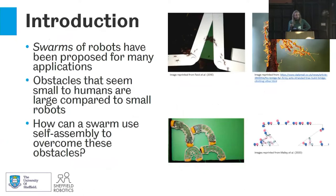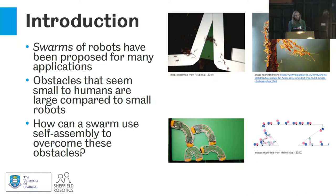We'll do a bit of motivation about what swarms are. Swarms are groups of robots that have been proposed for lots of applications, typically ones that cover a large area or require redundancy if agents fail. If you have large numbers of robots, to make a cost-effective swarm they often tend to be quite small physically and mechanically simple. This means they can squeeze through small areas, but obstacles that seem small to us can become quite large to small robots. My work looks at how these robots can build structures out of their bodies to overcome these obstacles.